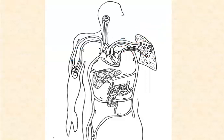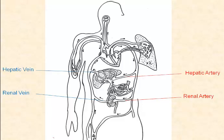Many major blood vessels are named for the organ that they deliver blood to or take blood away from. For example, the renal artery delivers blood to the kidneys, and the renal vein returns blood back to the vena cava and then to the heart. The word renal means kidney. Another example is the hepatic artery — hepatic means liver — so the hepatic artery delivers oxygenated blood to the liver, and the hepatic vein returns blood to the vena cava and then back to the right side of the heart.